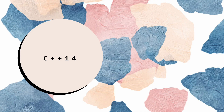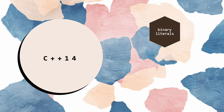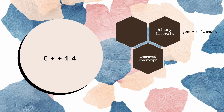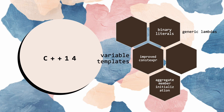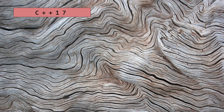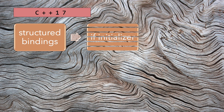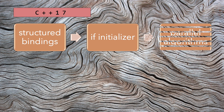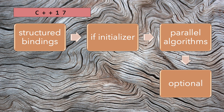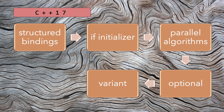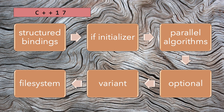Explore C++14 details: learn about binary literals, generic lambdas, and improved constexpr. See the strengths of variable templates and aggregate member initialization — these are new tools for creating sleek and effective code. Then discover the improvements in C++17: use structured bindings and if initializers for cleaner code, leverage parallel algorithms, and adopt optional and variant for safer programming. With additions like the file system library, C++17 broadens the capabilities of your coding toolbox.